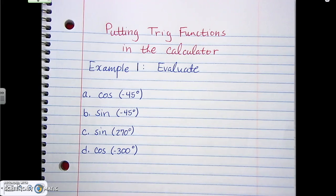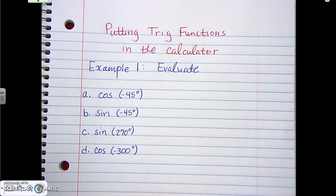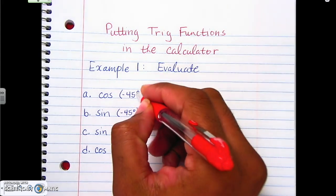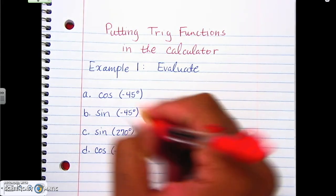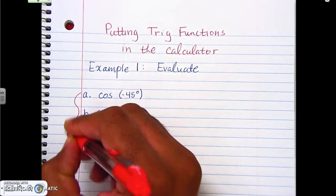We just talked about degree mode and radian mode. We said if it's degree mode, that means it has a degree symbol with the number. So if you look at each one of these here — for example one, where we evaluate it — if we look at A, B, C, and D: cosine negative 45 degrees, sine negative 45 degrees, sine 270 degrees, and cosine negative 300 degrees. Do we have degree mode here or radian mode? Is there degree symbols or no degree symbols? Hopefully everybody's seeing it — each one of these has a degree symbol on it. So therefore we are dealing with degree mode.